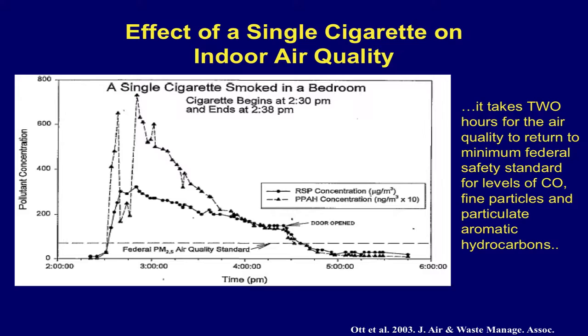What happens when you smoke a cigarette in a closed space? It takes about two hours for the air quality to return to minimum federal safety standards for carbon monoxide, particulates, and aromatic hydrocarbons. This shows the decay of those measured toxins from eight minutes of smoking a cigarette in a bedroom-sized space.